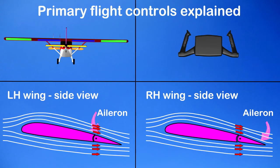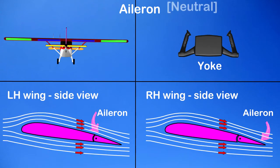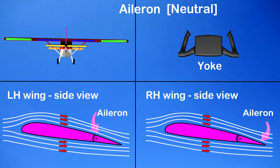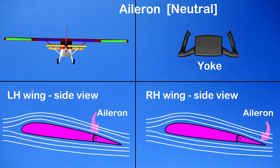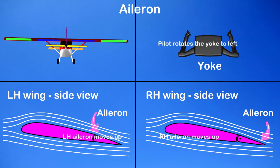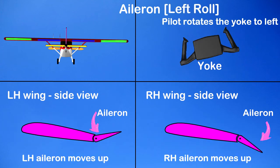Now we can see the left hand roll. Here both the ailerons are in neutral position — there will not be any change in aircraft attitude. For rolling the aircraft to the left, the pilot rotates the yoke to the left.